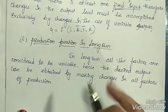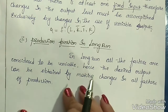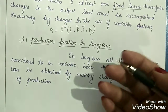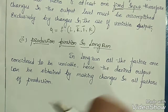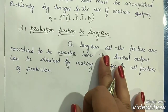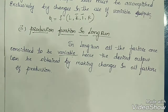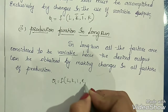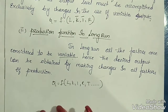Production function in long run: in long run, all the factors are considered to be variable. Hence, the desired output can be obtained by making changes in all factors of production. In long run we will have enough time, so if we are not satisfied with any input — even land — we can change it. Not even a single factor remains fixed. The equation becomes Q = F(L, K, I, R, technology, ...) with all inputs variable.